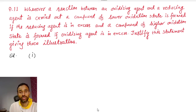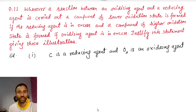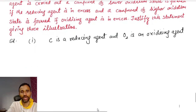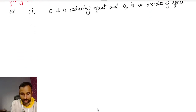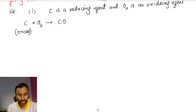Let us take carbon and oxygen. Carbon is a reducing agent and O₂ is an oxidizing agent. So if carbon and oxygen react: C + O₂ gives CO₂, but if carbon is in excess — meaning O₂ is in limited amount — then we get CO as a product.